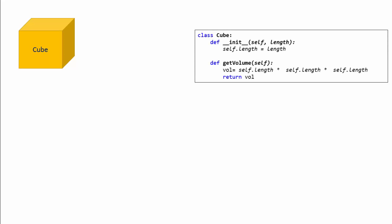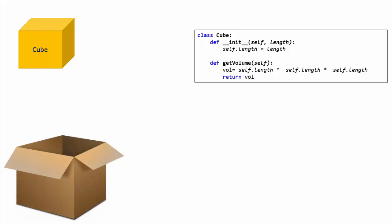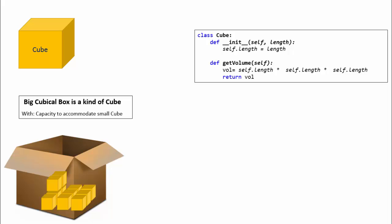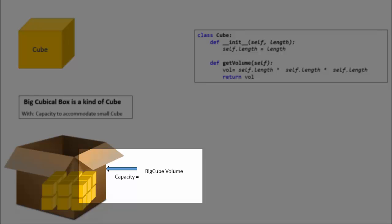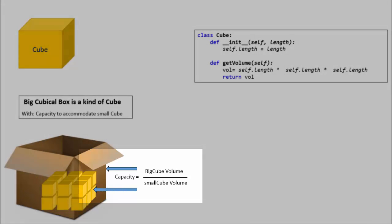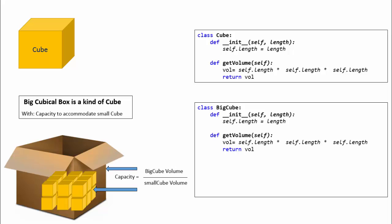Let us see another example. Let's write a class that represents this cube. The initializer needs at least one parameter to set its property length. The class has a getter method that returns the volume of cube based on the set length. Now let us consider a big cubical box which has a capacity to accommodate small cubes inside.